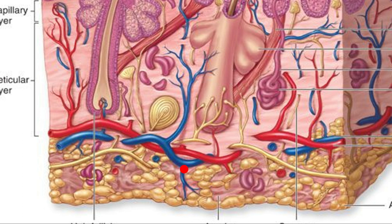The loose connective tissue connects the skin to the underlying muscles or other organs. As you can see, this loose connective tissue is very loosely attached to the underlying structure and the underlying muscles.